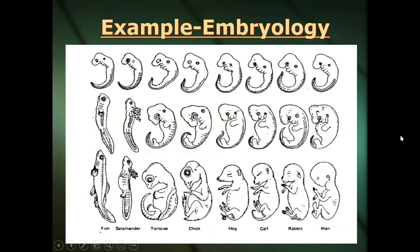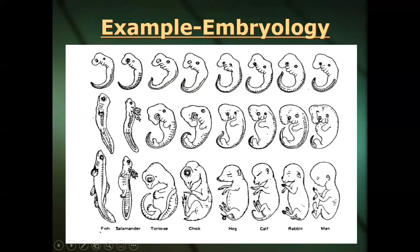If you look at this picture, we have embryos of different organisms: a human, a rabbit, a calf, a hog, a chick, a tortoise, a salamander, and a fish. Notice very early on those embryos all look very similar — if I cut them into pieces and asked you to put them in their different categories, it would be almost impossible. Even as they continue to develop you still see very similar features, and even when forming into a fetus you still see some similarities between organisms.